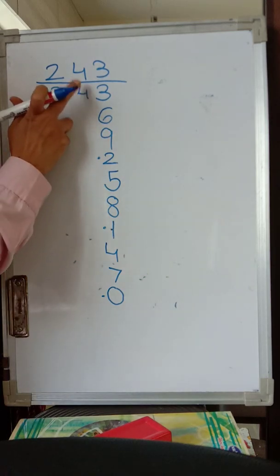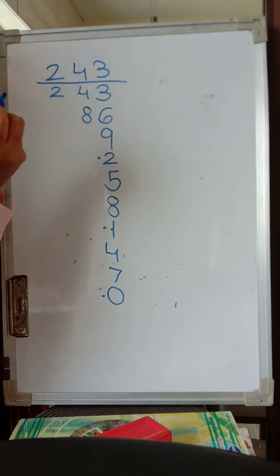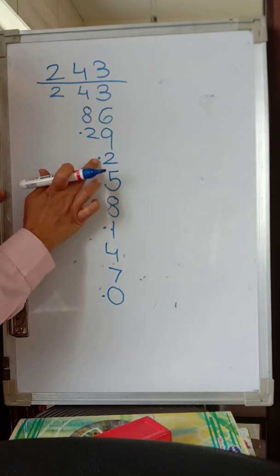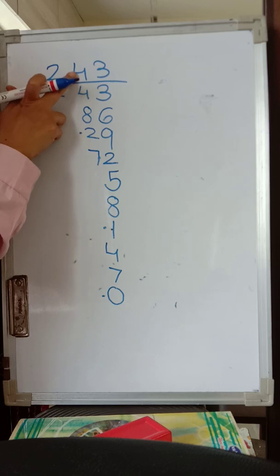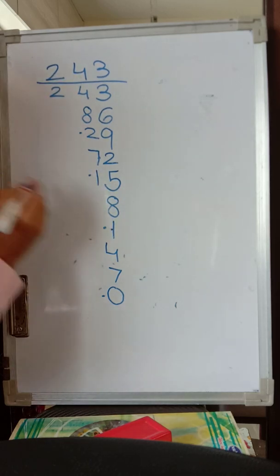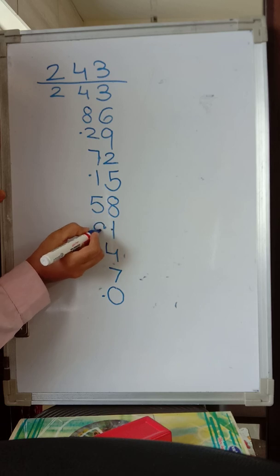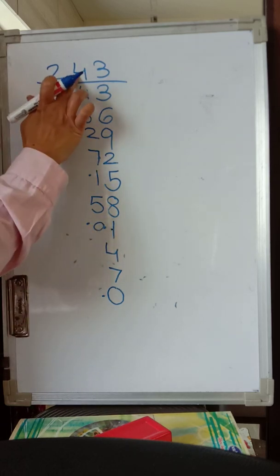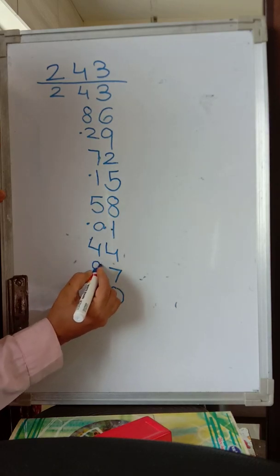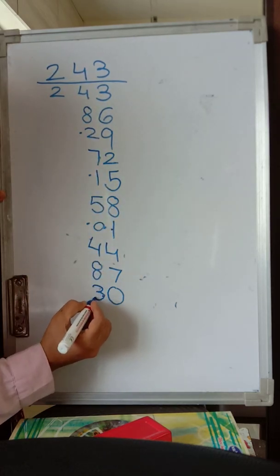Let us go for the tens column now. 4 plus 4 is 8 — no cleanser here, so only 8. 8 plus 4 is 12 — write 2 and cleanser. 2 plus 4 is 6, plus 1 dot is 7. 7 plus 4 is 11 — write 1 and dot. 1 plus 4 is 5 — nothing there, so only 5. 5 plus 4 is 9, plus 1 dot is 10 — write 0 and cleanser. 0 plus 4 is 4 — no cleanser. 4 plus 4 is 8. 8 plus 4 is 12, plus 1 dot is 13 — write 3 and dot.